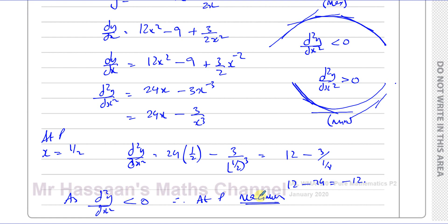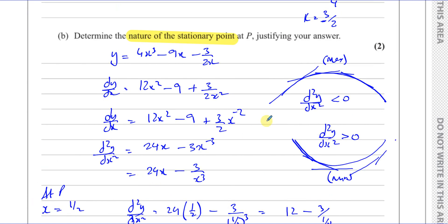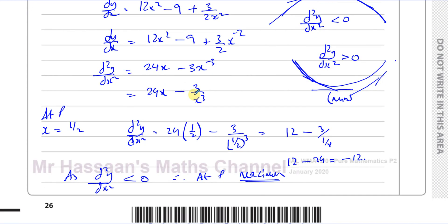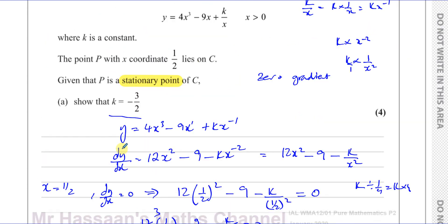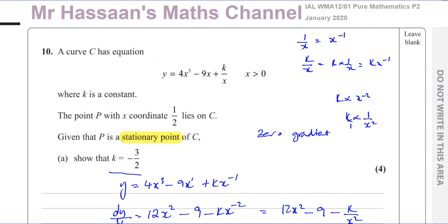Therefore, at P, we have a maximum. It's a maximum because the second differential is negative — the gradient at that point is going from positive to negative, decreasing as we move along. So when the second differential is less than zero, we have a maximum; if it were greater than zero, we'd have a minimum. That's the justification for part B. The second differential is less than zero at P, therefore P is a maximum.